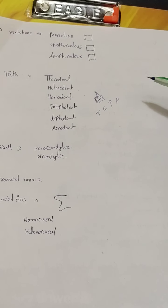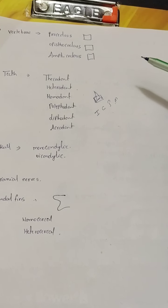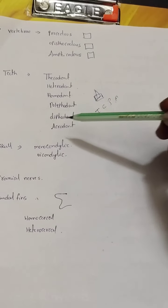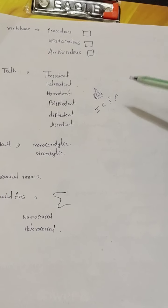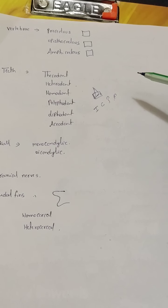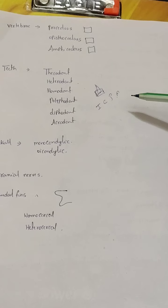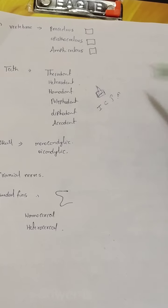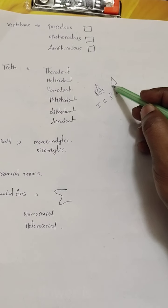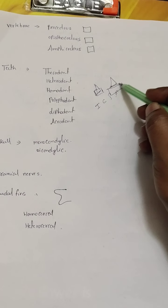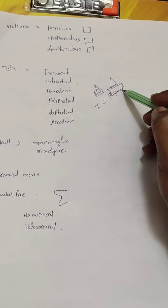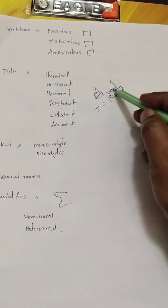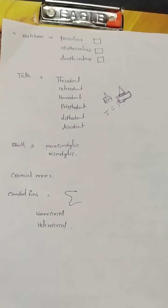Polyphyodont teeth means the teeth fall out and are replaced many times throughout life. Diphyodont teeth means teeth formation occurs only twice in a lifetime — for us, first the milk teeth, then the permanent teeth, so teeth form two times. Acrodont teeth are teeth present on the surface of the gums, not in sockets.